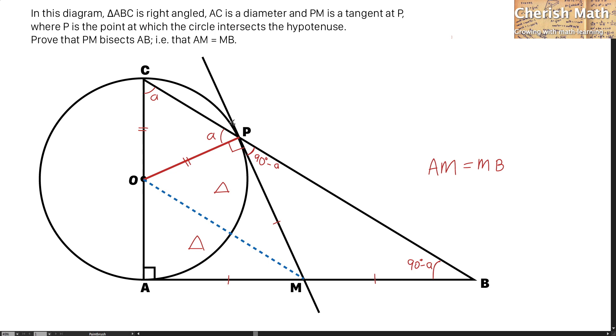That means the line PM bisects AB and we solve the puzzle here. Thanks for watching and please subscribe.